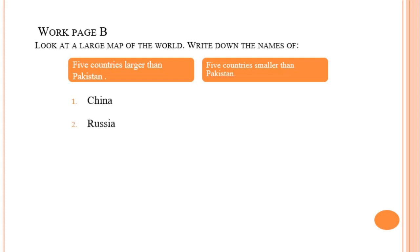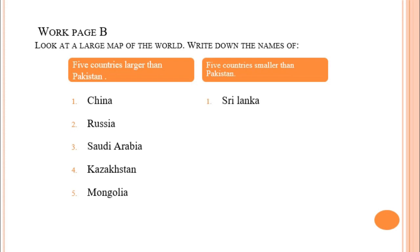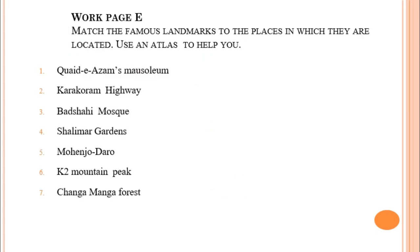I have selected a few for you. For countries larger than Pakistan: number one is China, number two Russia, number three Saudi Arabia, number four Kazakhstan, and number five is Mongolia. For countries smaller than Pakistan, I have selected: Sri Lanka, Bangladesh, Afghanistan, Brunei, and Nepal.